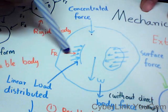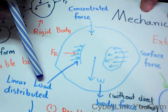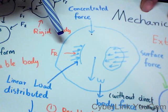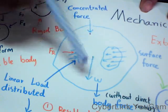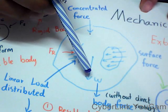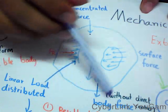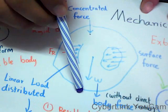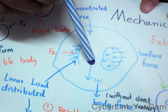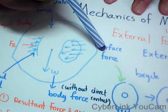If the distributed load is linear, we call it a linear distributed load. Another type of force is body force. Body force is the force that another body exerts on this body — for example, weight.